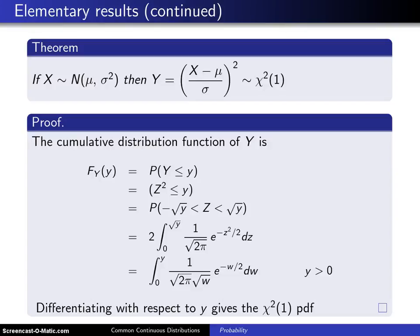Here is the third of our three elementary results. If X has a normal distribution with parameters μ and σ², then Y, which is ((X - μ)/σ)², has the chi-squared distribution with one degree of freedom. If you left the squared out, you get a standard normal, but when you square a standard normal, you get a chi-squared random variable with one degree of freedom.